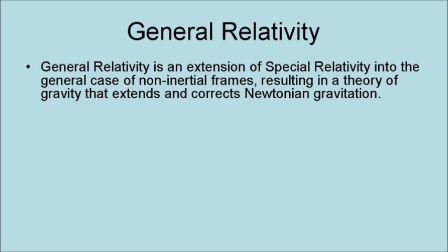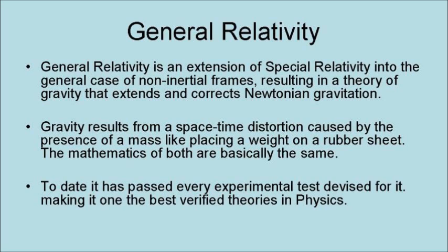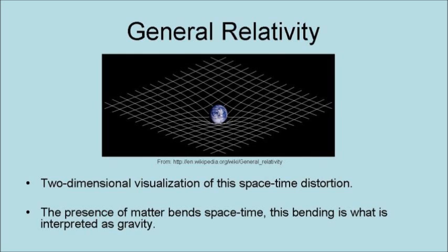General relativity is an extension of special relativity into the general case of non-inertial reference frames, resulting in a theory of gravity that extends and corrects Newtonian gravitation. Gravitation results from a spacetime distortion caused by the presence of a mass, like placing a weight on a rubber sheet. The mathematics of both are basically the same. To date, it has passed every experimental test devised for it, making it one of the best verified theories in physics. Here is a two-dimensional visualization of this spacetime distortion.